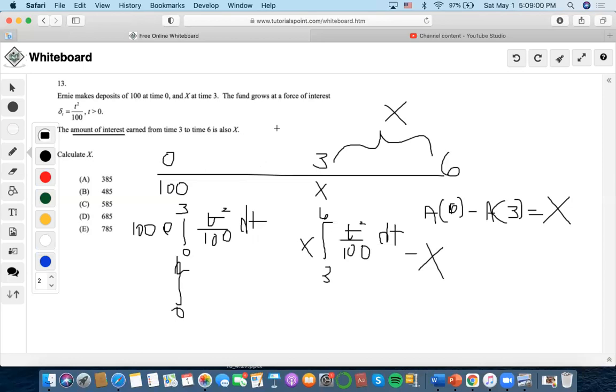We would take this value subtracted by x to find that portion of interest as well. We have to calculate the amount of interest from time 3 to 6.